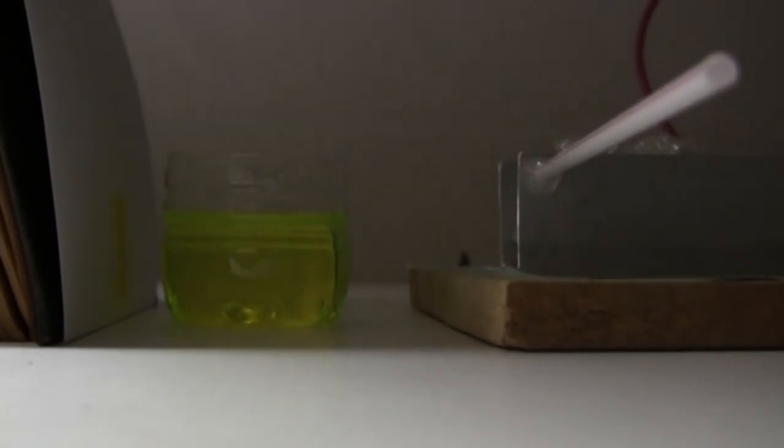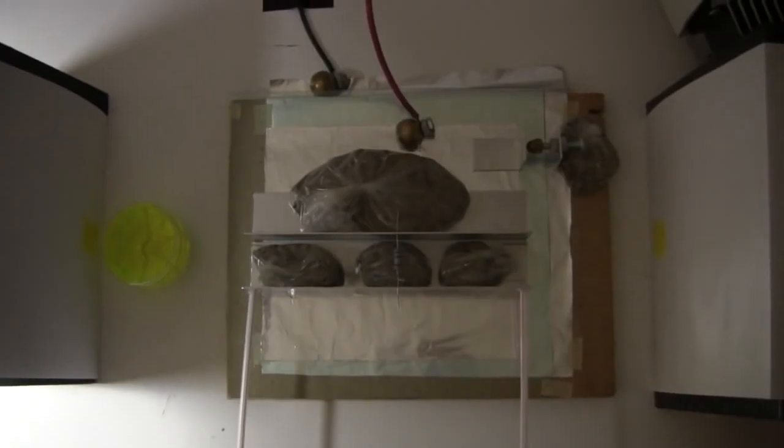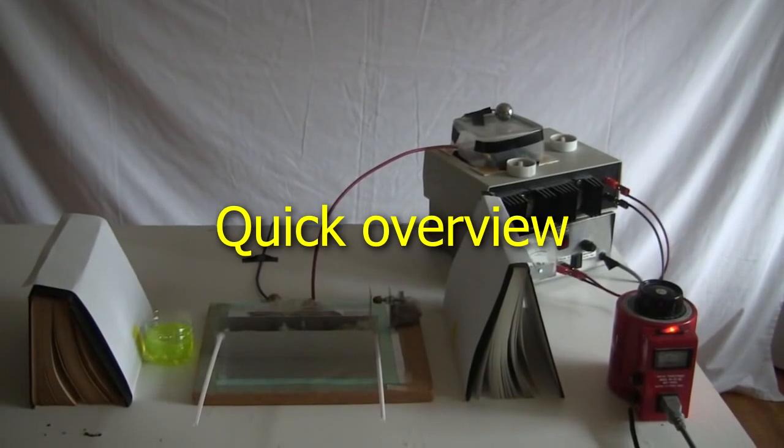But certain materials, like highlighter pen ink, turn that ultraviolet light into visible light, which we can see. Before showing you more demonstrations, here's a quick overview of the TEA Laser.